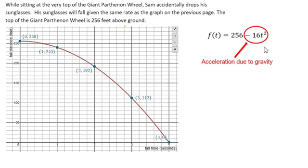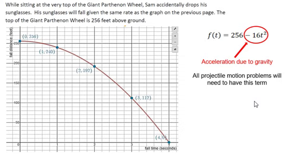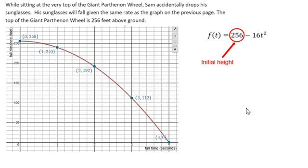This term is the acceleration due to gravity, representing 16 feet per second squared — the rate at which these glasses fall due to gravitational pull. Whenever we're dealing with projectile motion problems, this is the term we use for our quadratic functions. All projectile motion problems will include this term. Keep in mind this is in feet per second; sometimes you may see another value representing meters per second or kilometers. The other term represents our initial height, just as it does in linear functions.